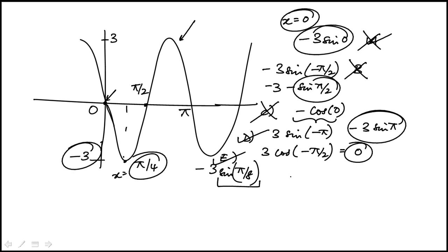d is going to be 3 times sine, 2x would be pi over 2 minus pi. This is going to be 3 sine minus pi over 2, which is minus 3 sine pi over 2. Sine pi over 2 is 1. So that is indeed minus 3. So that one works.